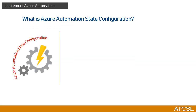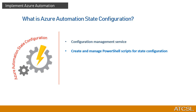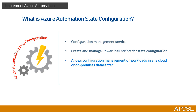What is Azure Automation State Configuration? Azure Automation State Configuration is a configuration management service in Azure that allows you to create and manage desired state configuration in PowerShell for workloads. These workloads can be physical or virtual and can be in any cloud or on-premises data center. It supports Azure Virtual Machines, physical or virtual machines, Windows machines on-premises or in other clouds, and also includes AWS EC2 instances.